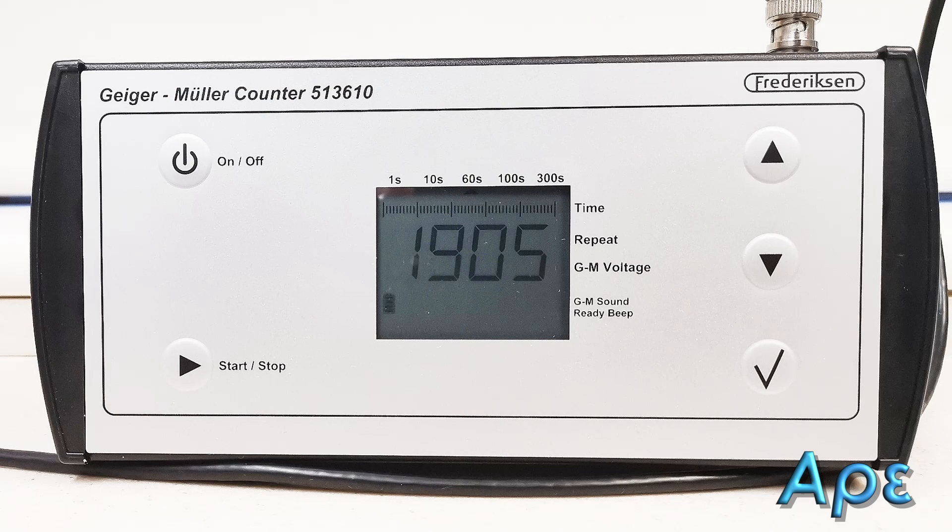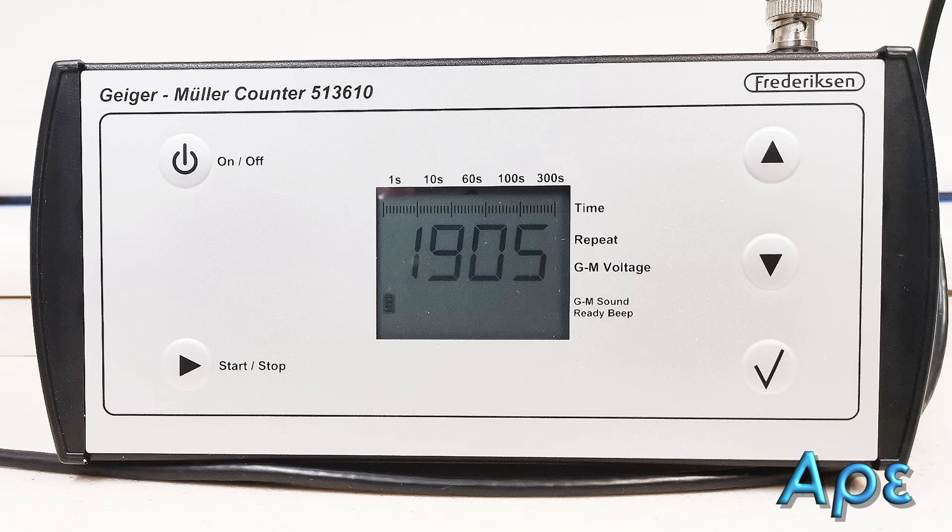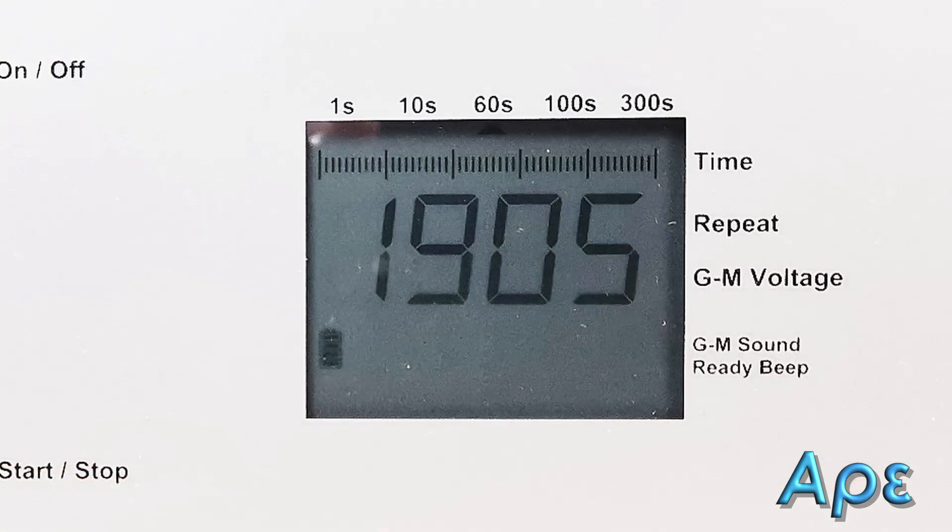The counter, once started, takes these signals and counts them. This particular counter can be set to read for specific periods of time. In the case we've just seen, for example, 60 seconds, as shown by the circled upward arrow at the top of the display. However, shorter or longer times can be set.